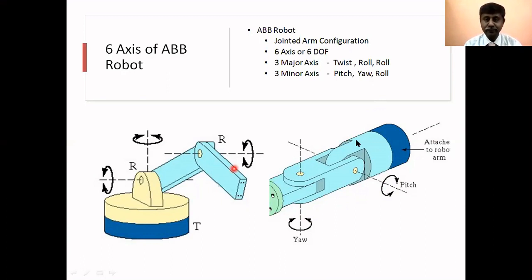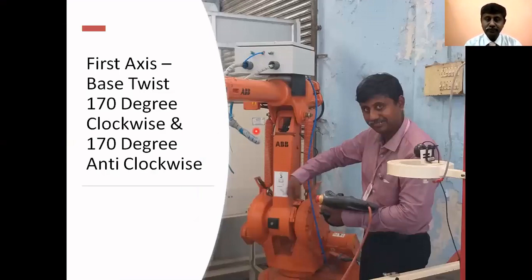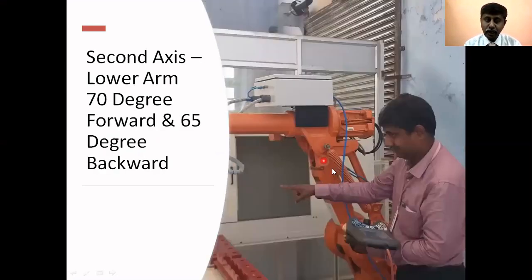This diagram shows the first degree of freedom, that is the twist of the robot. The robot can turn 170 degrees clockwise and 170 degrees anti-clockwise. Then the next degree is the lower arm. This lower arm can move in the forward direction about 70 degrees and in the backward direction about 65 degrees.